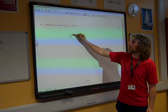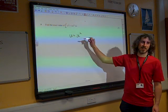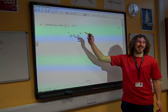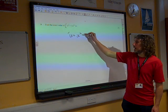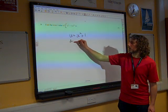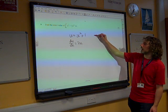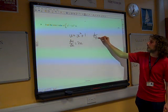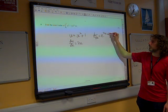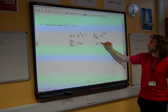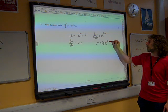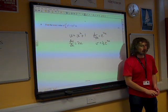So du by dx is 2x, and dv by dx is e to the 2x. And if we integrate e to the 2x, we get a half e to the 2x. That was one that we wrote in our list of standard integrals.